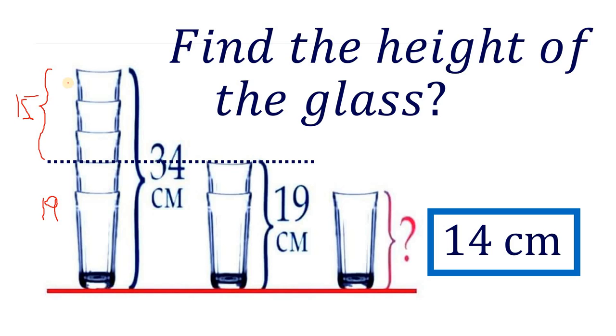Now, since it is 15 centimeters, therefore we can say that one of them must be equal to 5 centimeters. So now we know the height of this stack is equal to 5, so we know this is 5 also. Now we know that the top part must be equal to 5 centimeters, and the total is 19. So the bottom part must be equal to 19 minus 5 or simply equal to 14 centimeters.